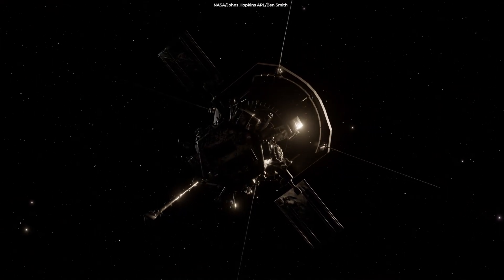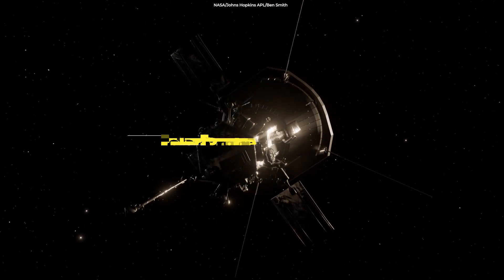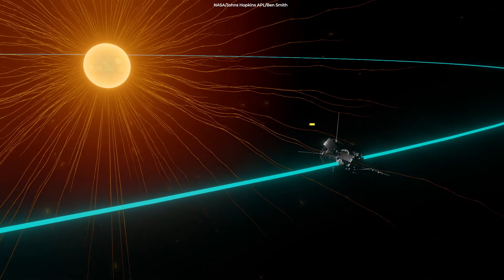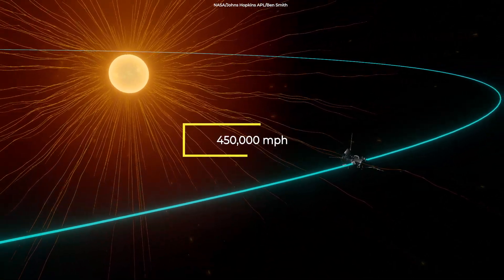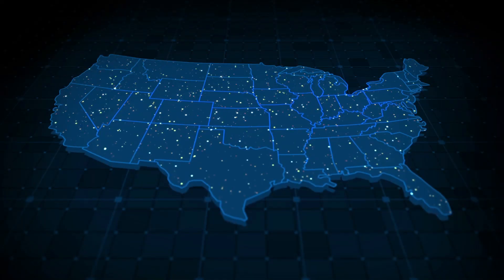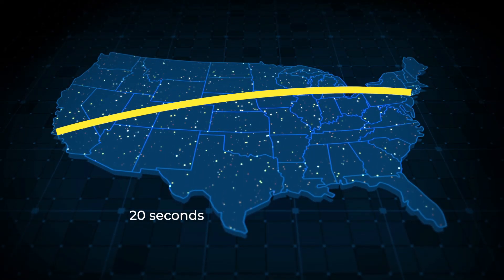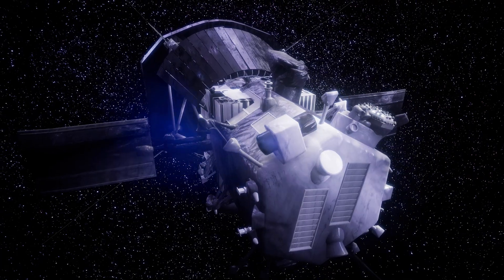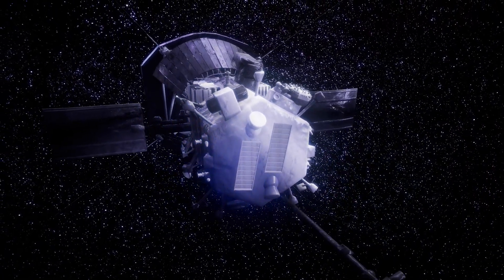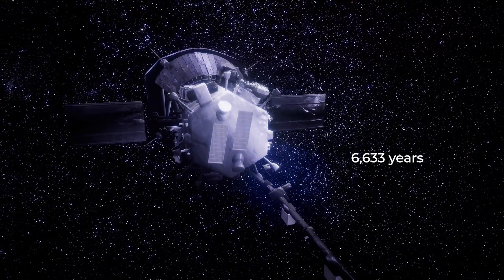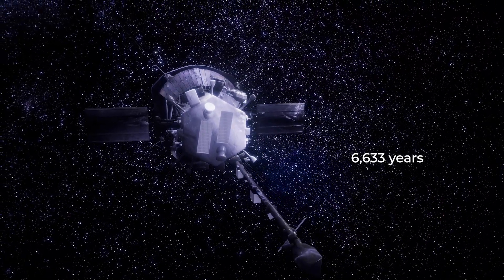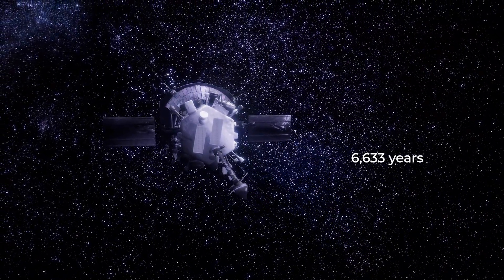The fastest-ever spacecraft, the now-in-space Parker Solar Probe, will reach a top speed of 450,000 miles per hour. It would take just 20 seconds to go from Los Angeles to New York City at that speed, but it would take the solar probe about 6,633 years to reach Earth's nearest neighboring solar system.